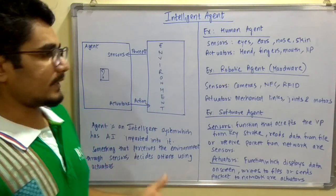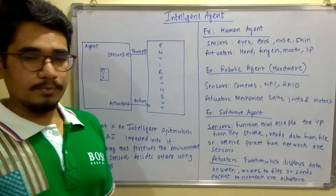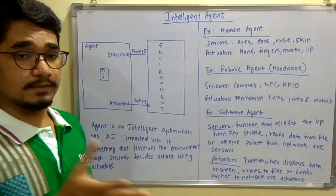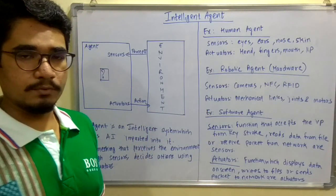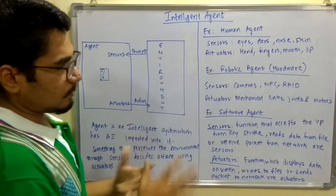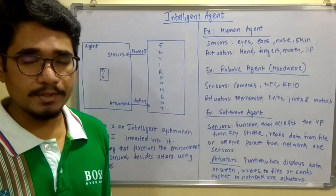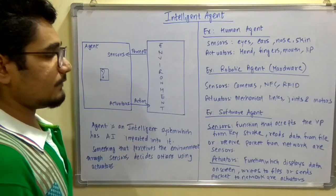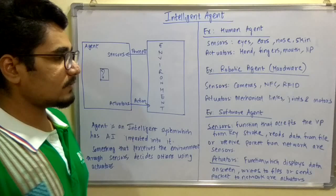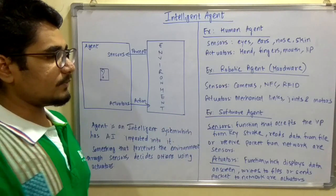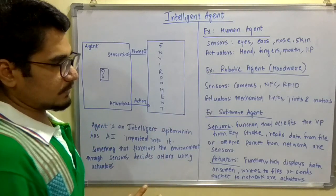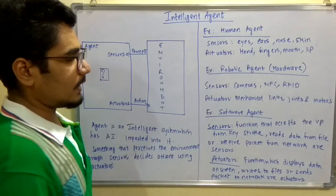Moving to computer-based systems, we have hardware agents as well as software agents. For hardware agents, the exact example is robots — robotic agents. In robotic agents, sensors include cameras, NFC (Near Field Communication), RFID (Radio Frequency Identification), and similar technologies. For actuators you have mechanical links, joints, and motors, which you can find in toy robots or large robots.